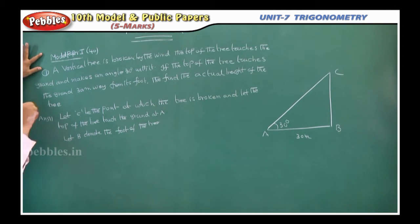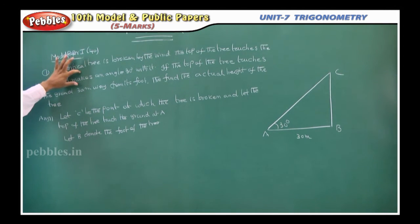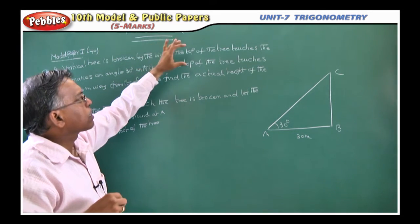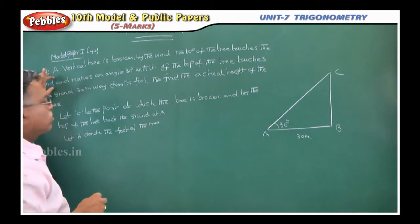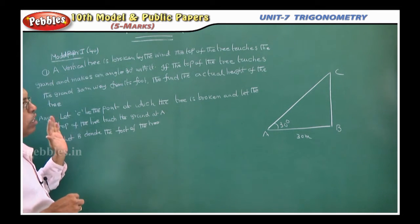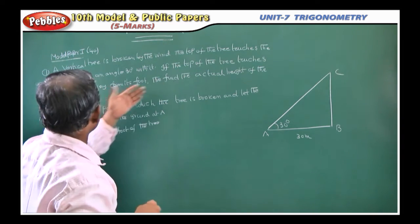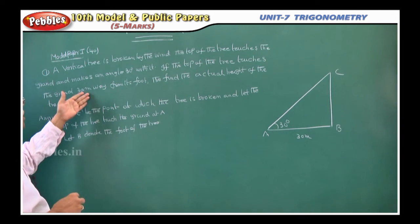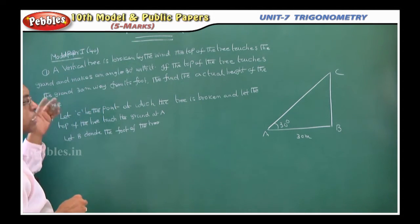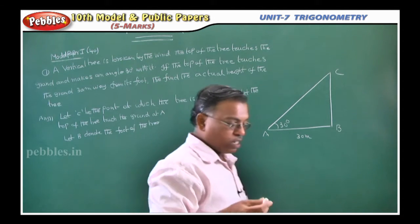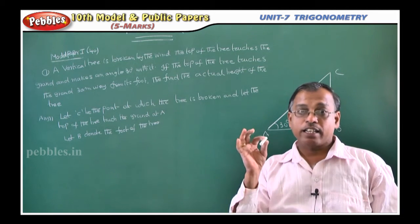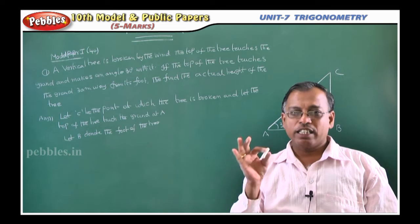These are all some important questions. A vertical tree is broken by the wind and the top of the tree touches the ground and makes an angle of 30 degrees with it. If the top of the tree touches the ground 30 meters away from its foot, then find the actual height of the tree. First of all, you should understand the problem clearly and you should draw the diagram correctly, otherwise you will get a wrong answer.